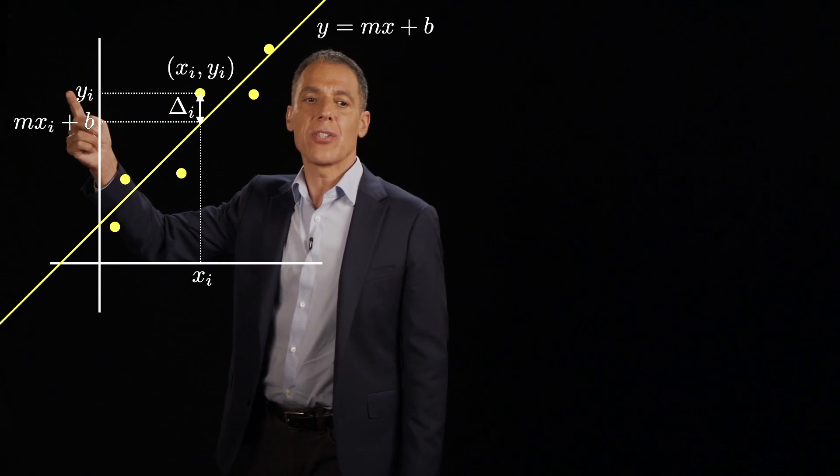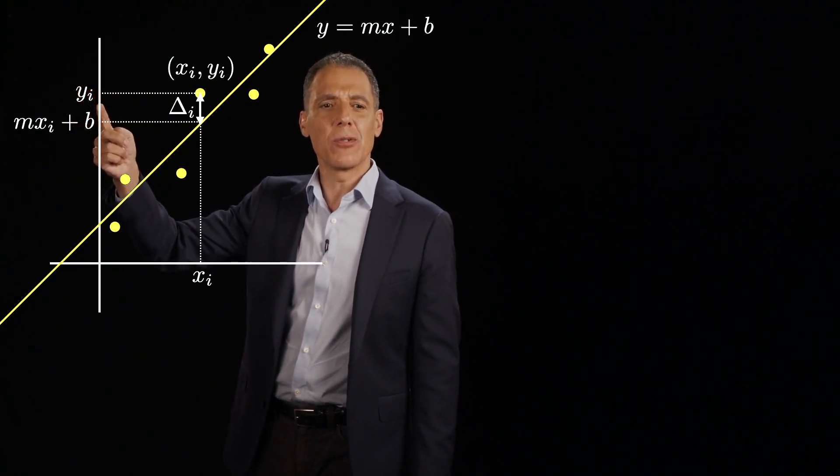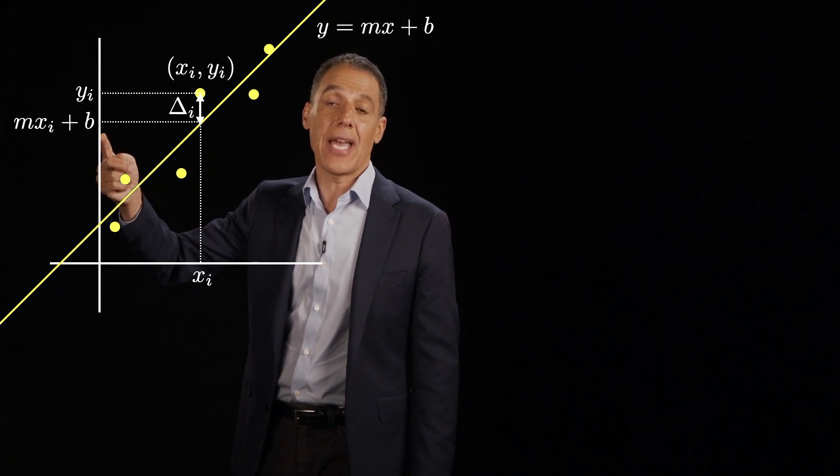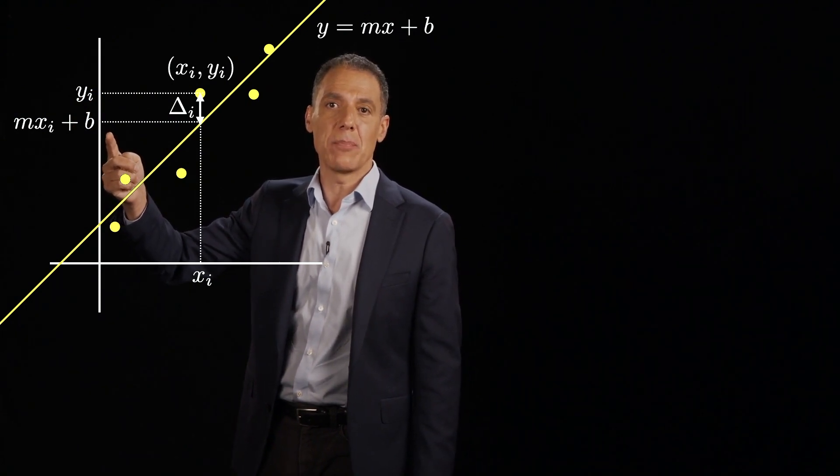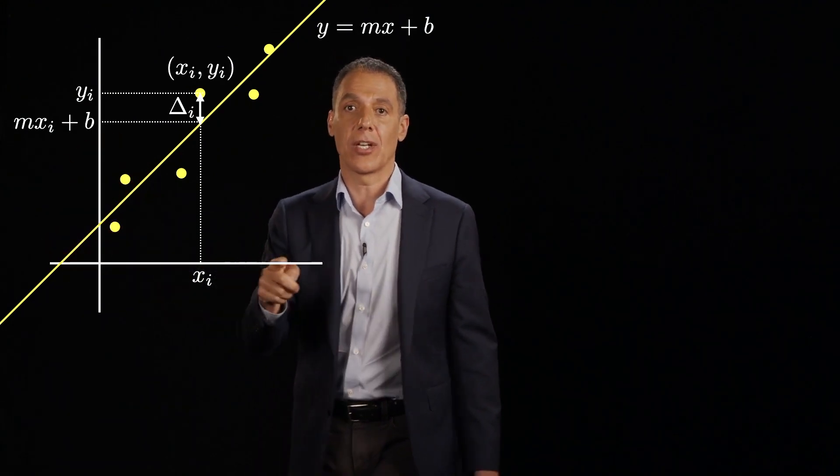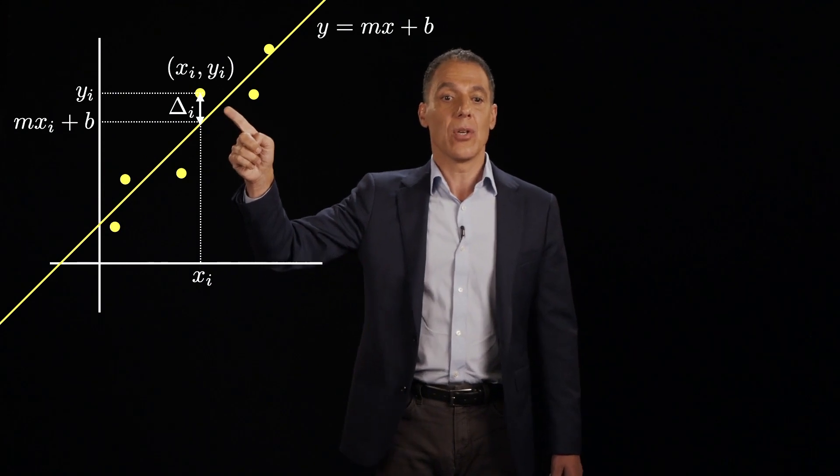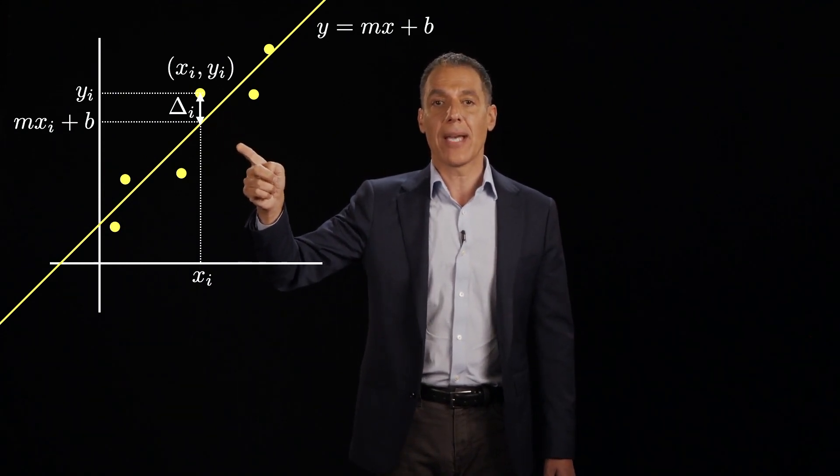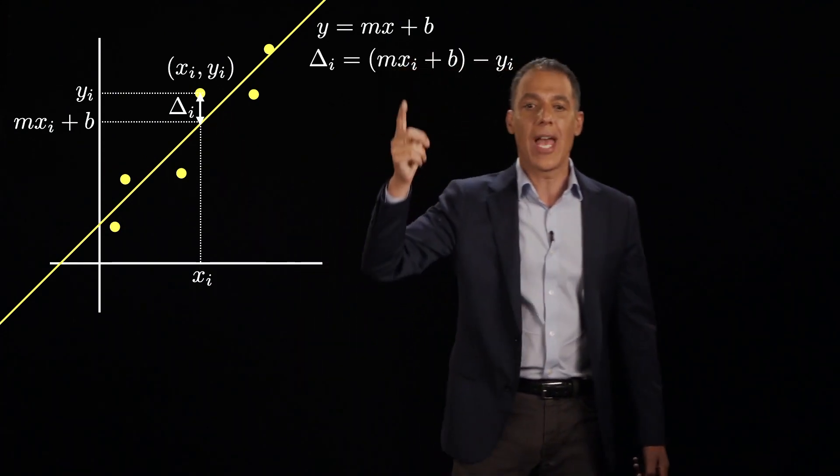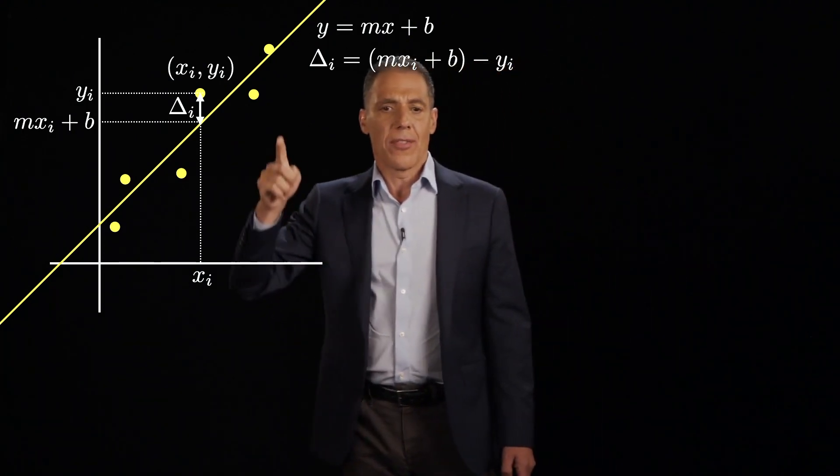Where is the y? Well, yi. That's the point. Where should it be if it was on the line? The line has a slope of m and an intercept of b. So it should be at mxi plus b, where xi, of course, is just the parameter there. And so that distance here is yi minus mxi plus b, or mxi plus b minus y.